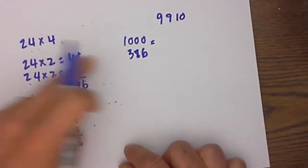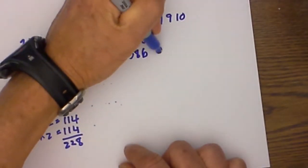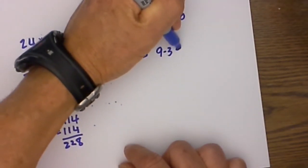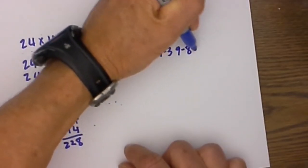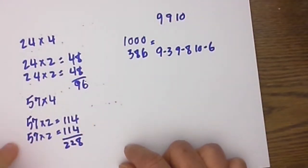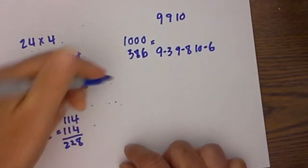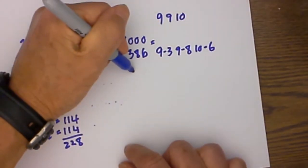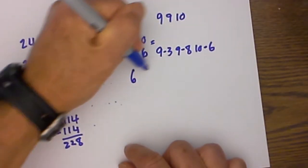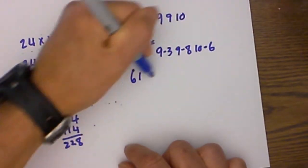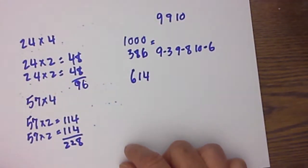So you take 9 minus the first digit, 9 minus the second digit, 10 minus the last digit. Here we go: 9 minus 3 is 6, 9 minus 8 is 1, 10 minus 6 is 4, so the answer is 614.